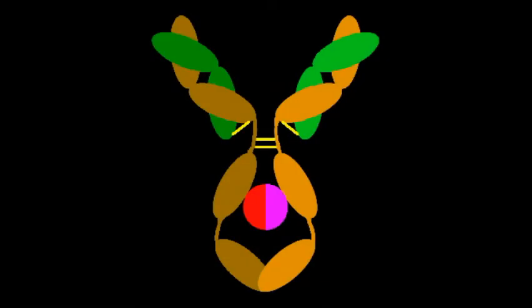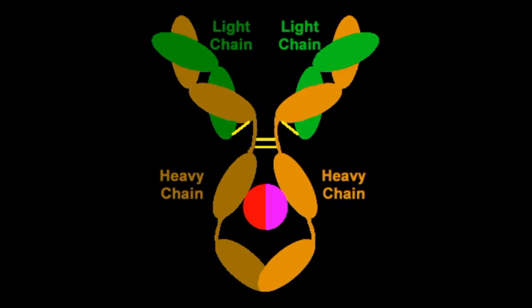In order to understand the structure of immunoglobulin G antibody better, we'll use this schematic diagram. There are two heavy chains, each of which is made up of four immunoglobulin domains represented by the ovals here. There are two light chains, and each of these has only two immunoglobulin domains.